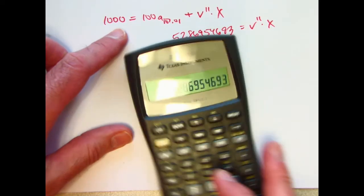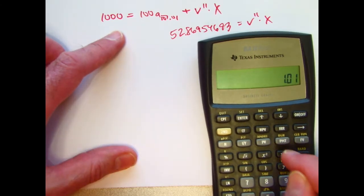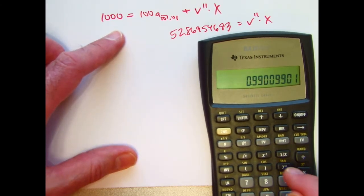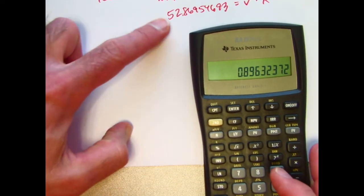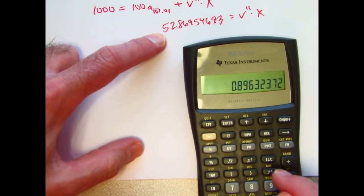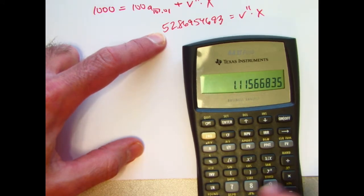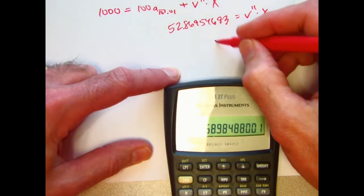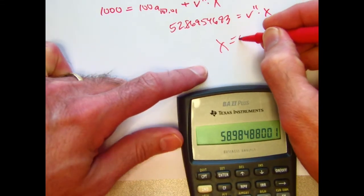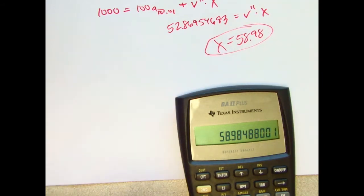What's v again? v is the reciprocal of 1.01. Need to raise that to the 11th power and divide both sides by that. So take its reciprocal and multiply by what was in register one. And we get the final smaller payment, the value of x to be 58.98. And that is the correct answer.